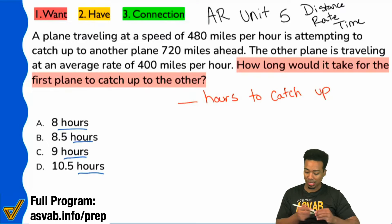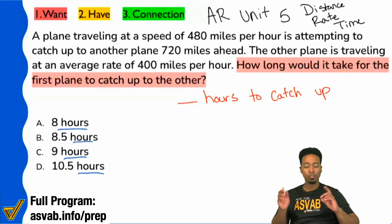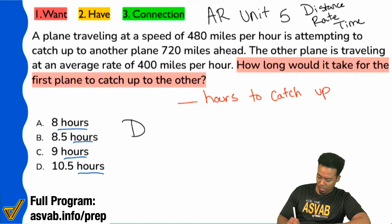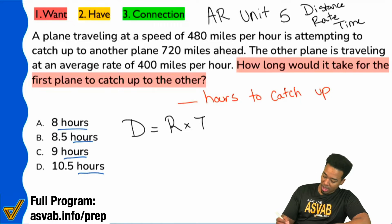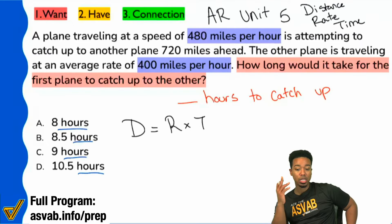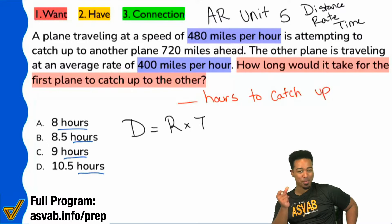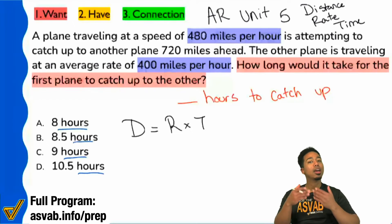The other plane is traveling at an average speed of 400 miles per hour. For those looking at this and saying 'distance equals rate times time,' well, we typically only have one rate — but the problem is we have two rates: 480 miles per hour and 400 miles per hour. That's an issue. We need to understand what we're supposed to do with these rates. Let me lay out the information first, and then I'll show you why we're going to do what we're going to do.